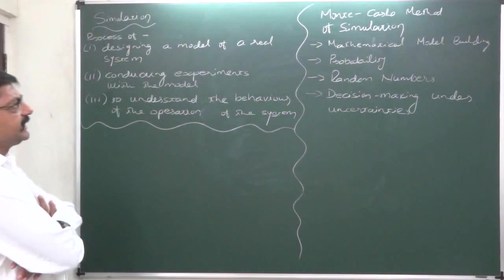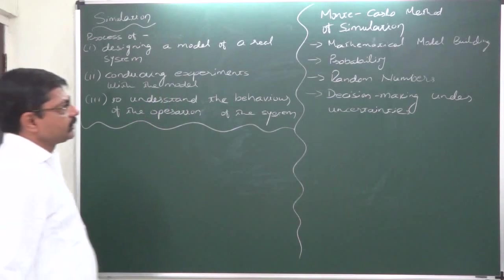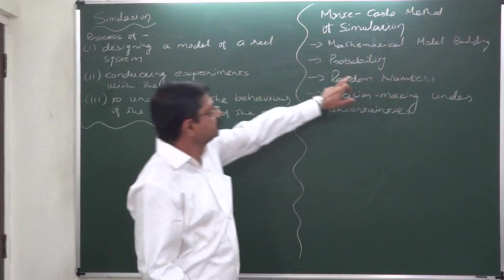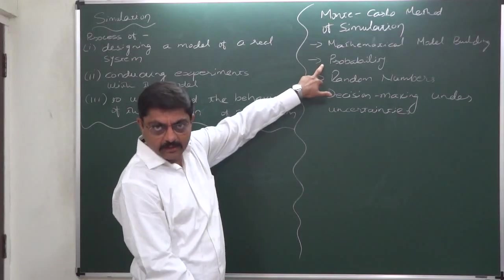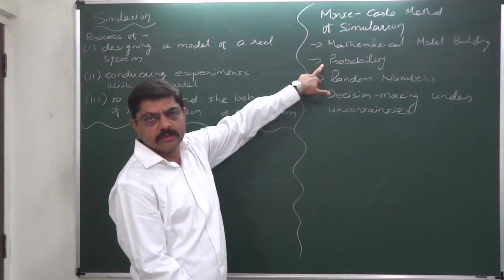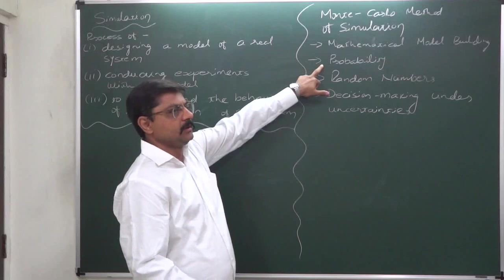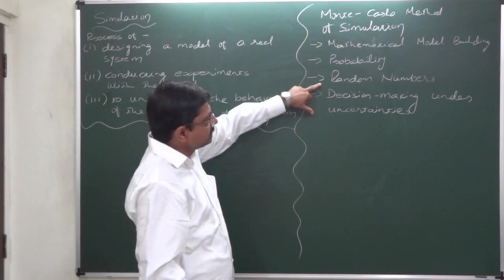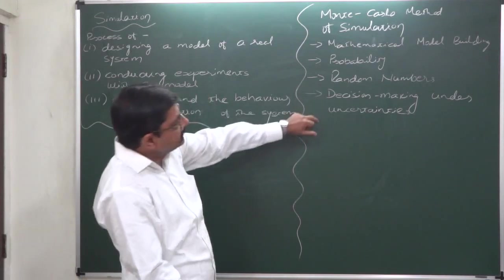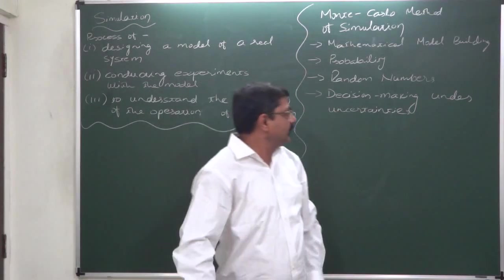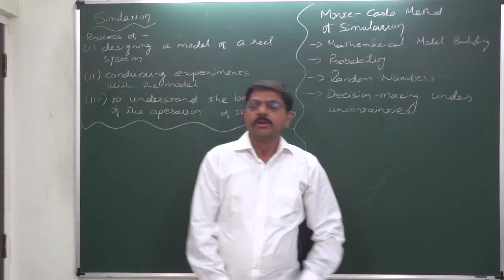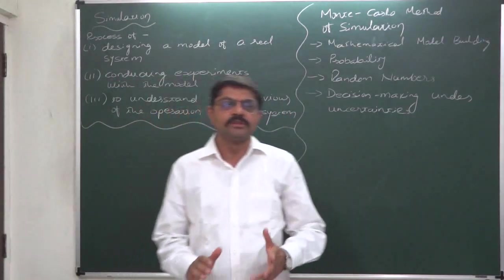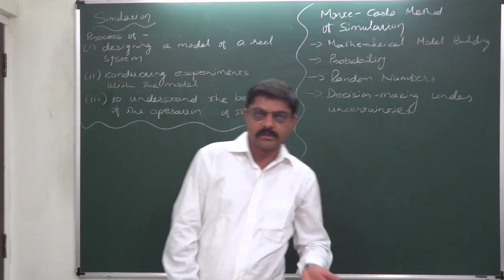We can summarize the Monte Carlo method of simulation as: it is a mathematical model building, it uses probability of various possible outcomes, it uses random numbers, and ultimately it is decision making under uncertainties. This was a primary discussion about simulation and Monte Carlo method.